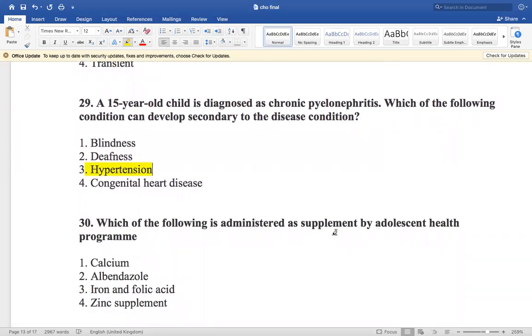Which of the following is administered as supplement by adolescent health program? Calcium, albendazole, iron and folic acid, and zinc tablet. So as supplement we have iron and folic acid tablet under weekly iron folic acid supplementation program.